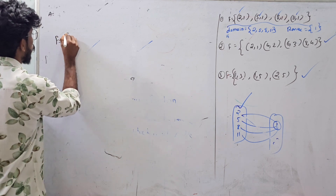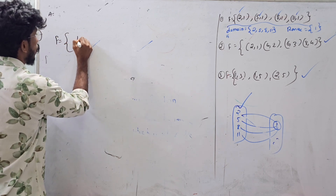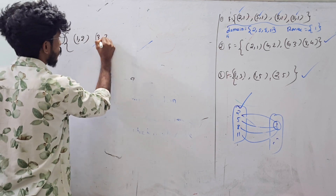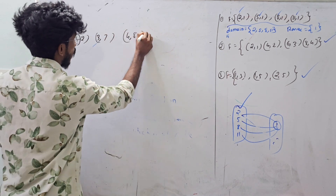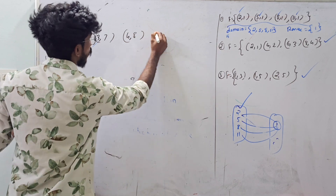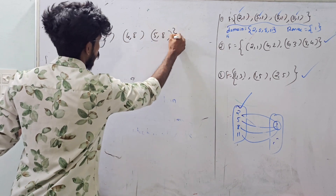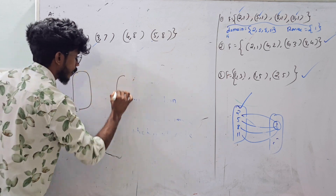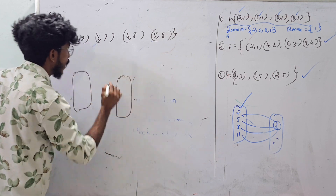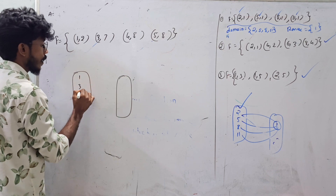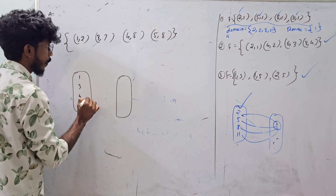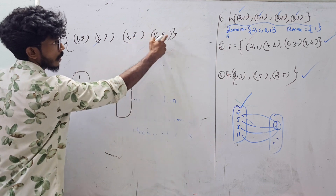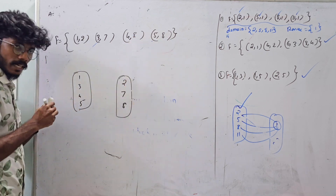F is equal to the set: (1, 2), (3, 7), (4, 8), (5, 8). Now you can use an arrow diagram. On one side: 1, 3, 4, 5. On the other side: 2, 7, 8.